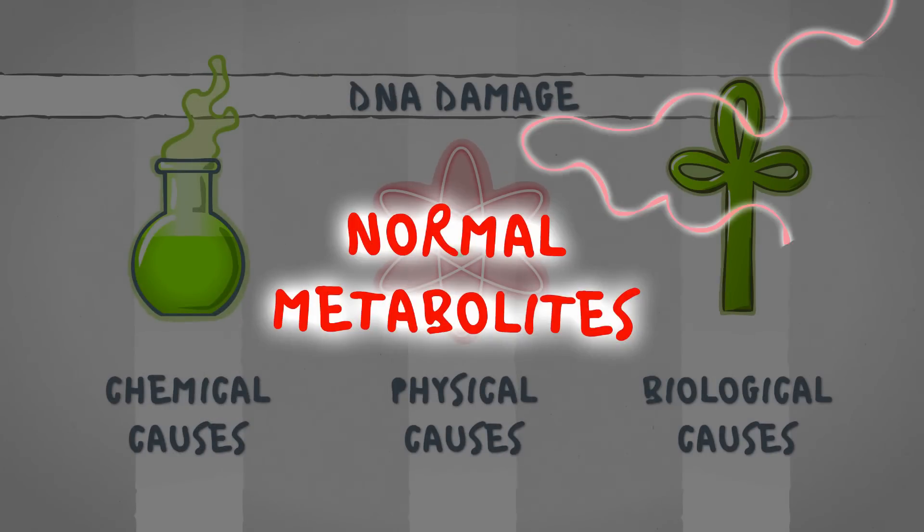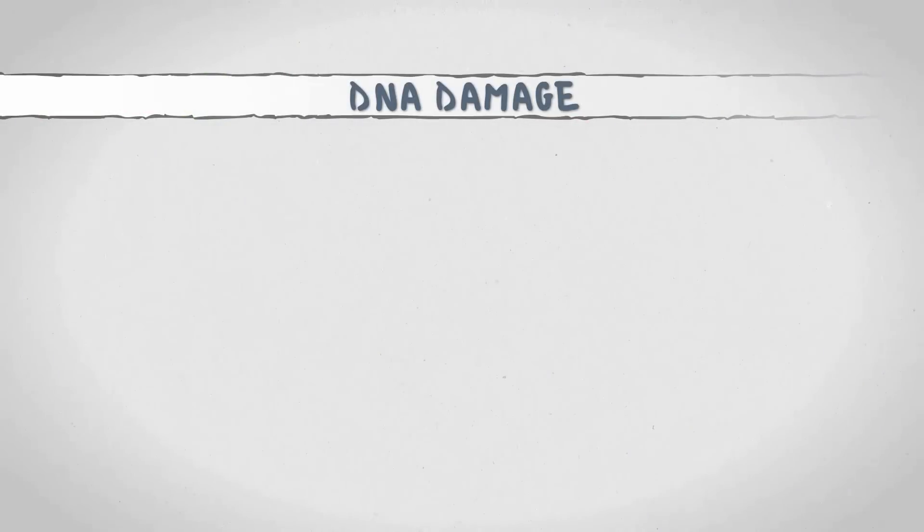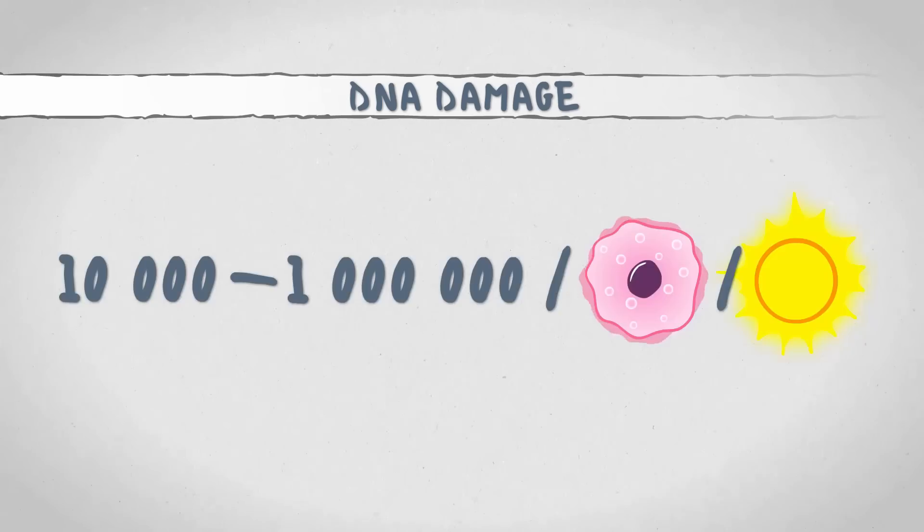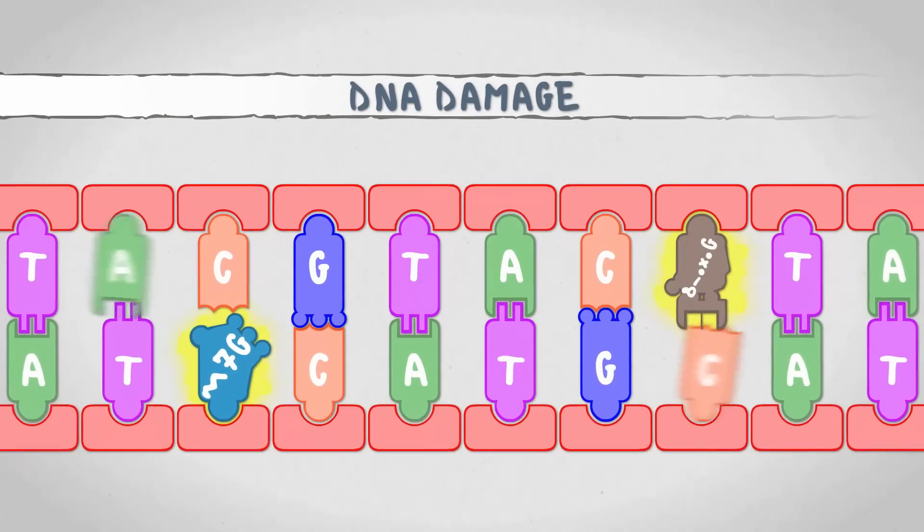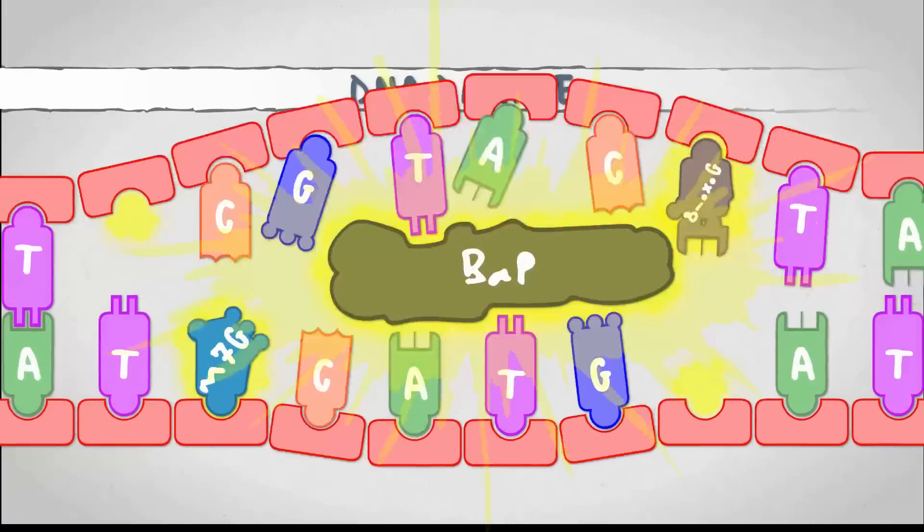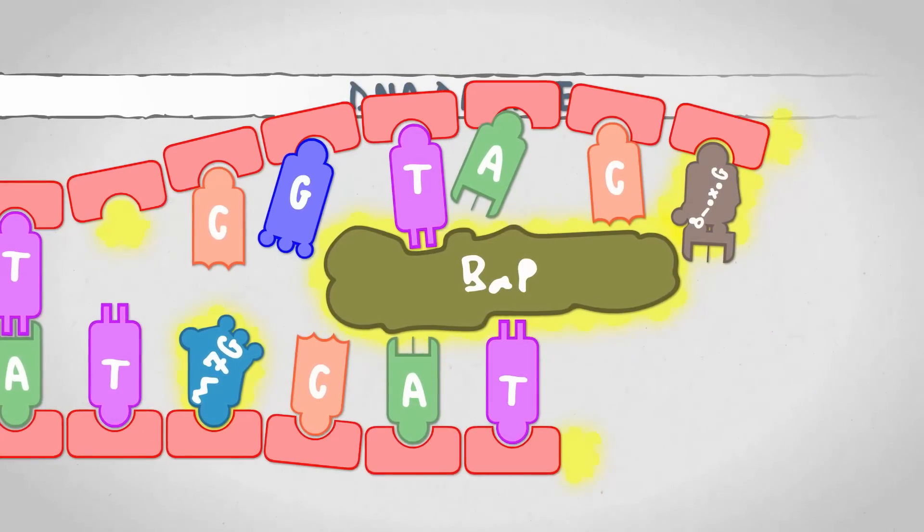It would be a miracle if a molecule so long and thin always remained intact. The estimated amount of DNA damage falls between 10,000 and 1,000,000 per cell per day. A few examples include bases transforming or dropping out, or ginormous molecular crap getting attached to them, and even the chains may break.